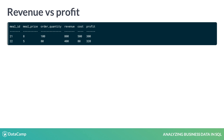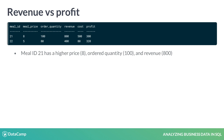Meal 22 has a price of 5 and has been ordered 80 times, so its revenue is 5 times 80 equals 400. Its purchase cost is 80, so its profit is 400 minus 80 equals 320. Even though meal 21 has a higher price and order quantity, and thus a higher revenue, meal 22 generated more profit, because the difference between its revenue and cost was higher than meal 21's difference.